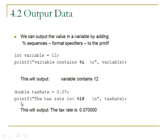If we wanted to output a double value, we would use the format specifier %lf. That looks like '1f' but it isn't — it's 'lf'. That corresponds to the double variable tax rate. This would output the tax rate as 0.070000. The default for the %lf format specifier is six places of accuracy past the decimal, which is not always what you would want.